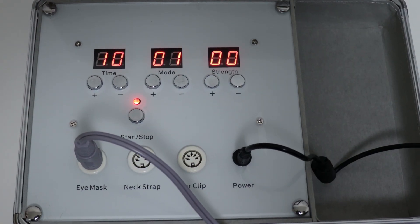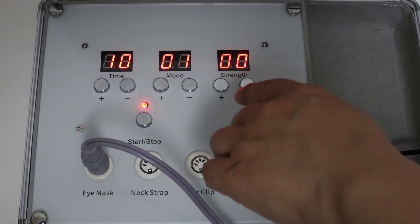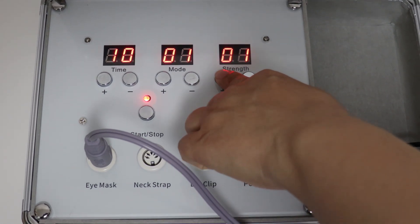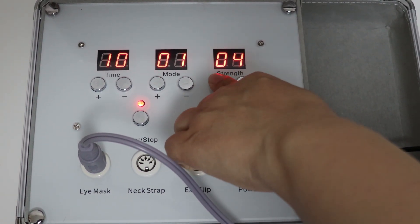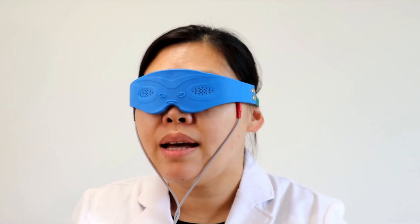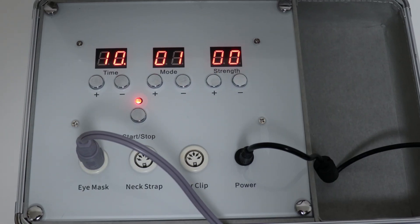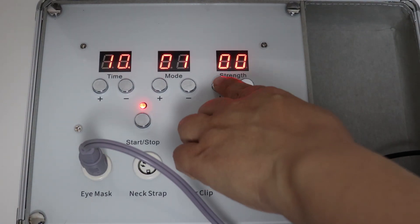Adjust the strength from zero to the level that feels most tolerable and comfortable for you. The mask should fit securely but comfortably, and your eyes should remain closed throughout the treatment. Gradually increase the strength to allow your eyes to adapt.